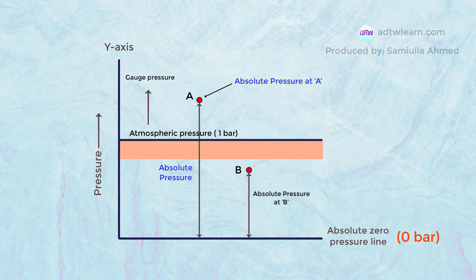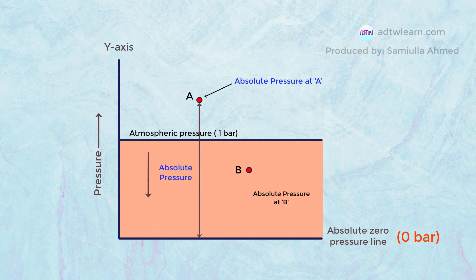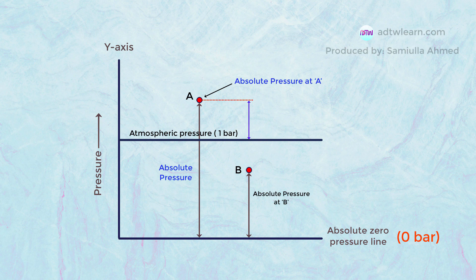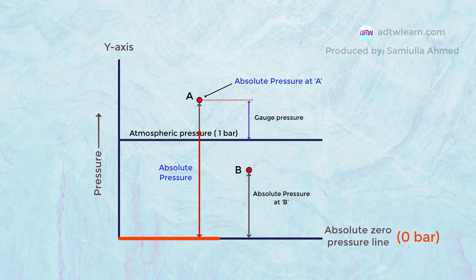And the pressure measured below this line is called vacuum pressure. For example, if we measure the value of pressure at point A from atmospheric pressure, then this pressure is called gauge pressure. But if we measure pressure from the absolute pressure line, that pressure will be different because it will have this extra value of pressure, and it is called absolute pressure.